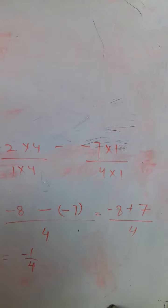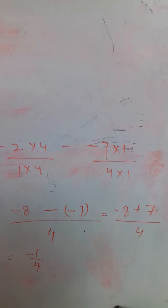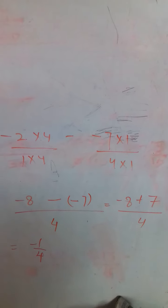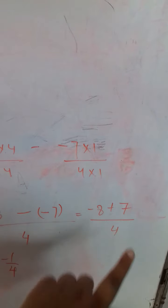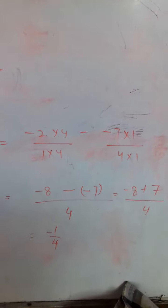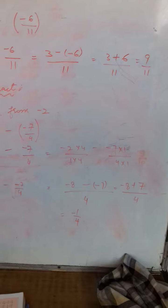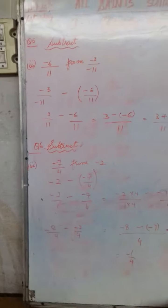Minus minus plus. So, minus 8 plus 7. So, 8 minus 7. 1 upon 4. Okay. And 8 is greater. So, minus 1 upon 4. Please copy it down.